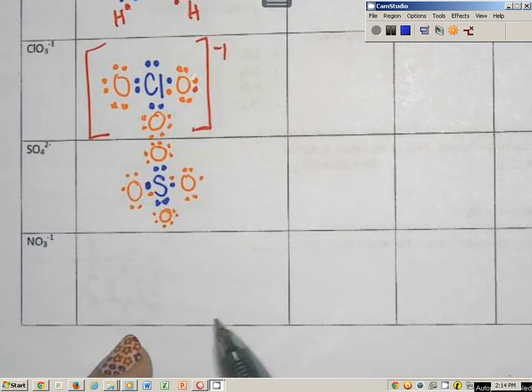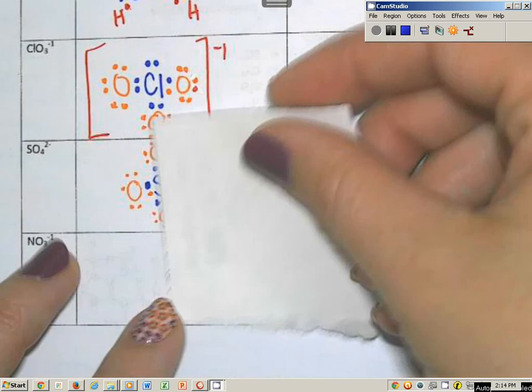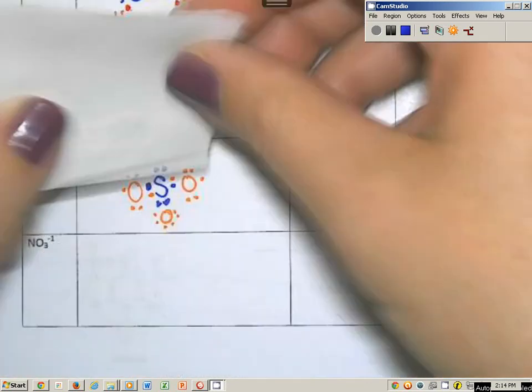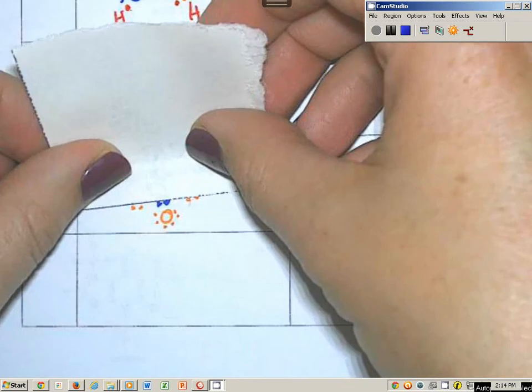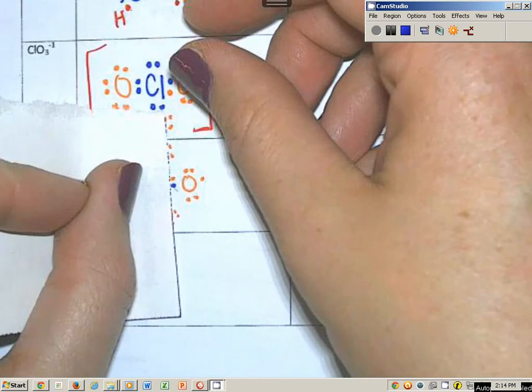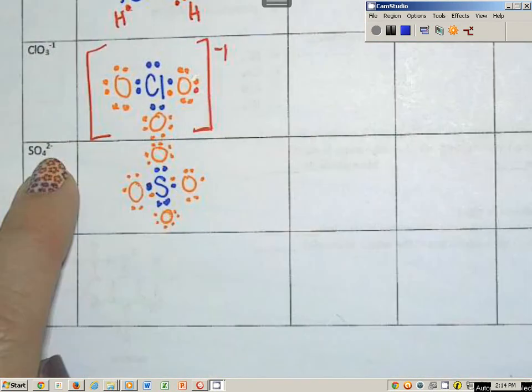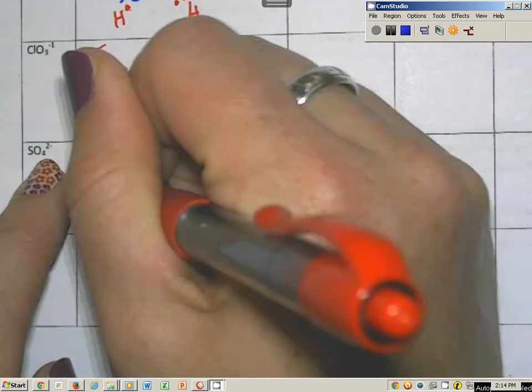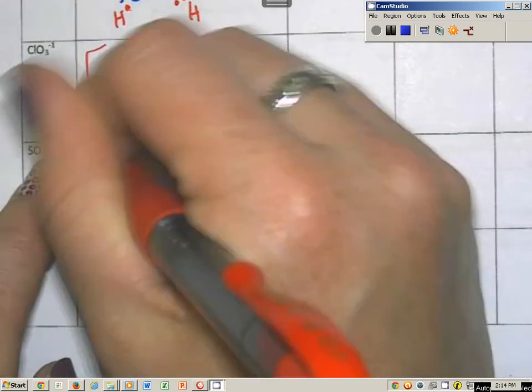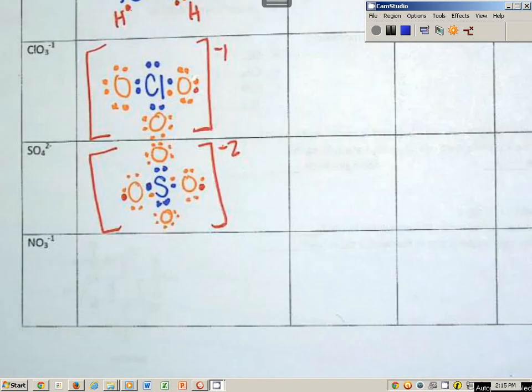And if I stop to do my double check, that one has eight. That one has seven. The bottom one has eight. And then the right one has seven. Well, I'm short two electrons, but it has a two minus charge. So I get to put one there and one there from a cation of something.